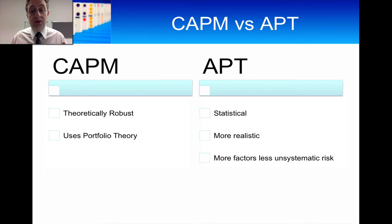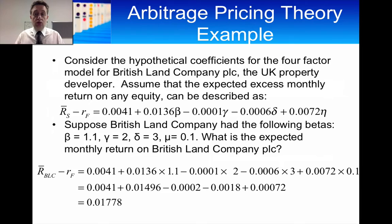You have less unsystematic risk because the risk of the returns is being explained by all those factors, and less unsystematic risk is a good thing. So you would say that APT is arguably more realistic because instead of just having one factor with CAPM, APT can have many factors, including the market factor which CAPM has.